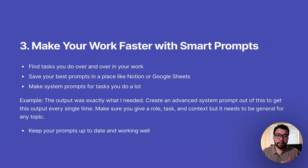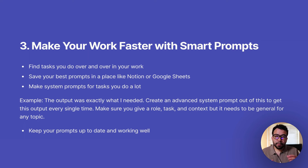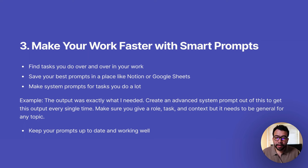Now that you've chosen the tools you want to focus on, it's important to continue using your prompts and fine-tuning them for each tool. To make your work and productivity faster, create system prompts. Find tasks you do over and over in your day-to-day business and save those prompts into a place like Notion or Google Sheets. This is key for optimizing your time and outsourcing to a VA or someone else you're working with. System prompts are ones you can copy and paste into your AI tool, and they'll generate the same response structure on different topics.